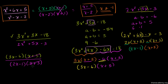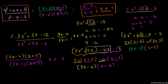We cancel the common factor (x + 3), but we must add the condition that x cannot be equal to negative 3, because that would make us divide by 0, which is undefined. So this expression is equal to (3x − 6)/(2x − 1), granted that x does not equal negative 3.